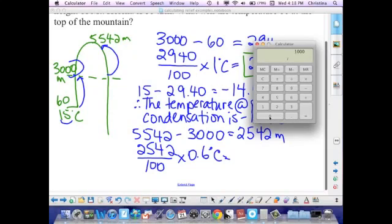So let's calculate that. 29.40 plus 15.25 gives us an answer of 44.65. And so we're going to do 15 minus 44.65, which gives us an answer of negative 29.65 degrees Celsius.